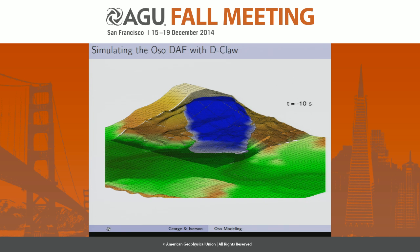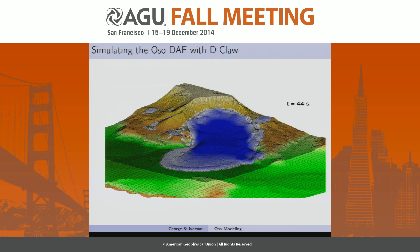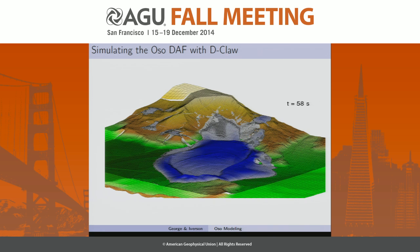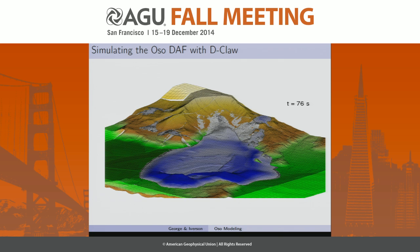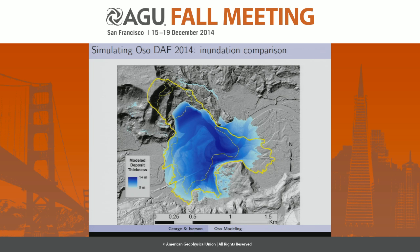Here's an oblique view of the simulation with that source volume. Now, of course, we can't perfectly simulate the sequence of events and the initiation that Kate will elaborate on next, but the basic goal is just to get a feel for the run-out behavior after that initiation sequence. The run-out predicted by the model was reasonable given the field evidence of the run-out.